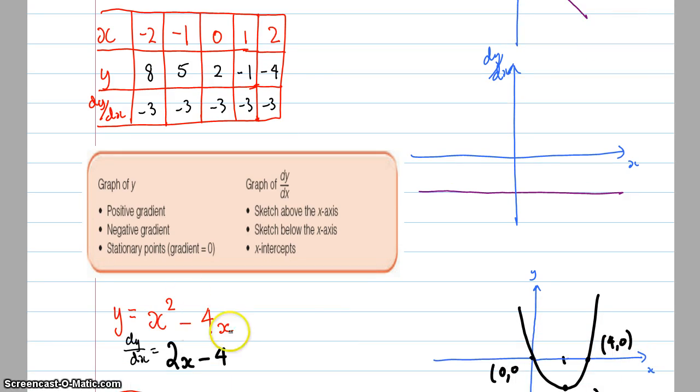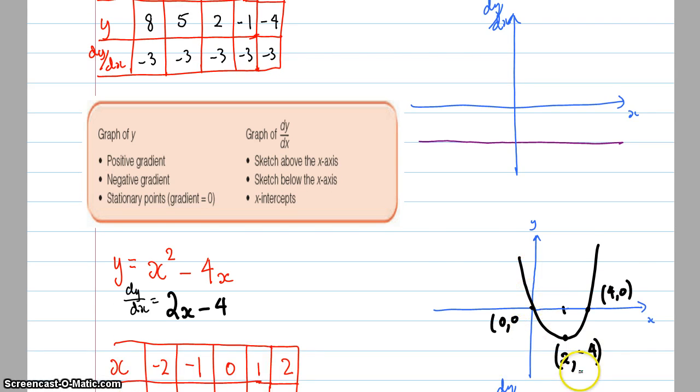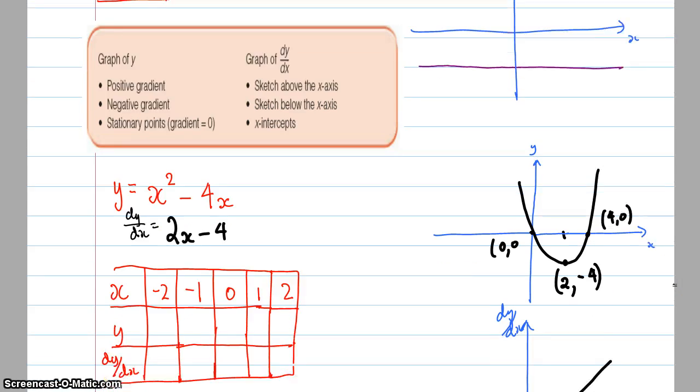So I've got x-squared minus 4x. That's what it looks like over here. And the stationary point at 2, negative 4 and intercepts at 0 and x equals 4. So I'm going to use this table to find out what all of the answers will be. I'm just going to pause and fill in these answers just so you don't have to watch me doing all that.